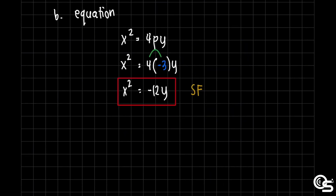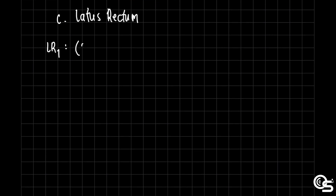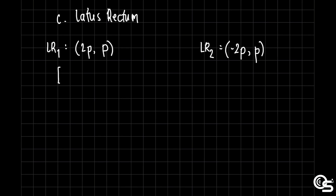Next, let us find the endpoints of the latus rectum. From summary table number 1, LR₁ is at (2p, p) and LR₂ is at (negative 2p, p). Substituting p equals negative 3: LR₁ is (2 times negative 3, negative 3), which gives us (negative 6, negative 3).